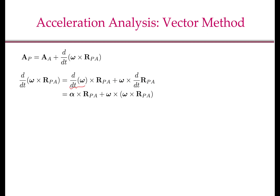d/dt of omega is the angular acceleration alpha, so the first term becomes alpha cross RPA. The second term becomes omega cross (omega cross RPA), since we showed that d/dt of RPA equals omega cross RPA. We now simplify omega cross (omega cross RPA) using the vector triple product identity.